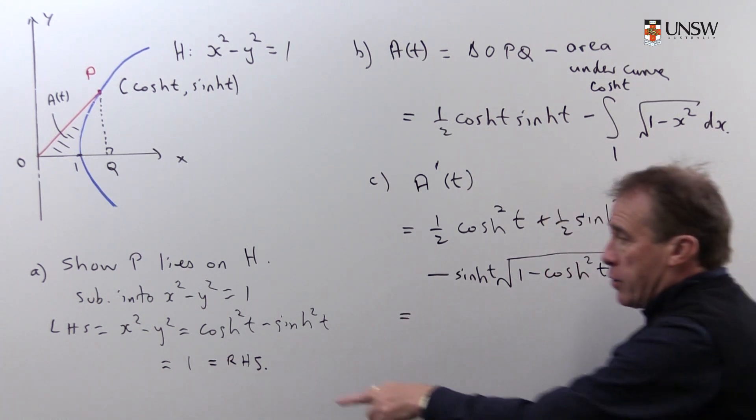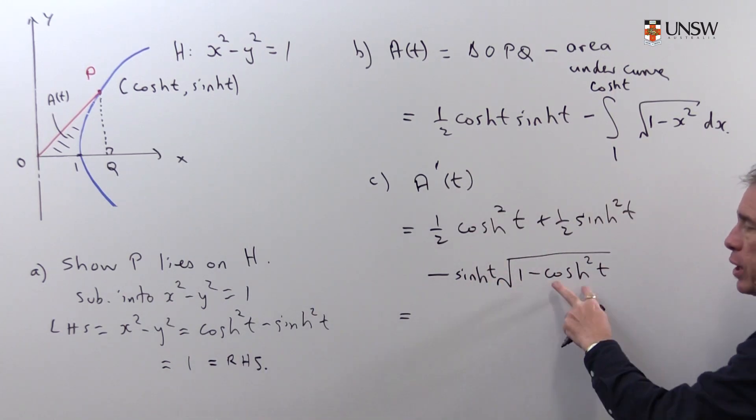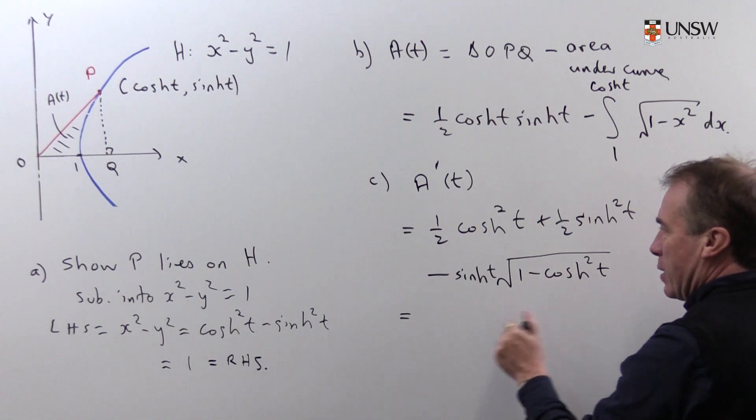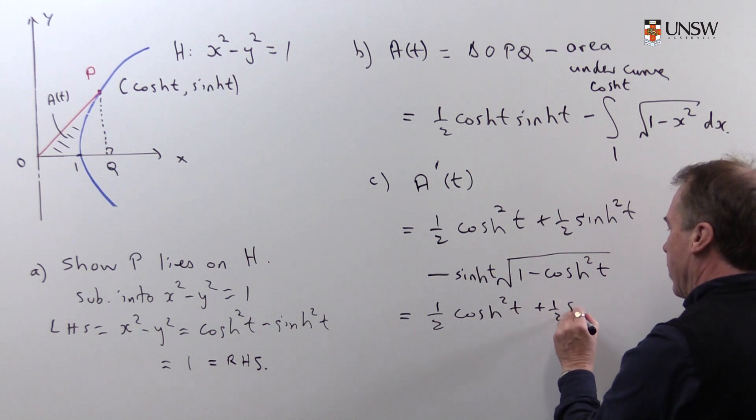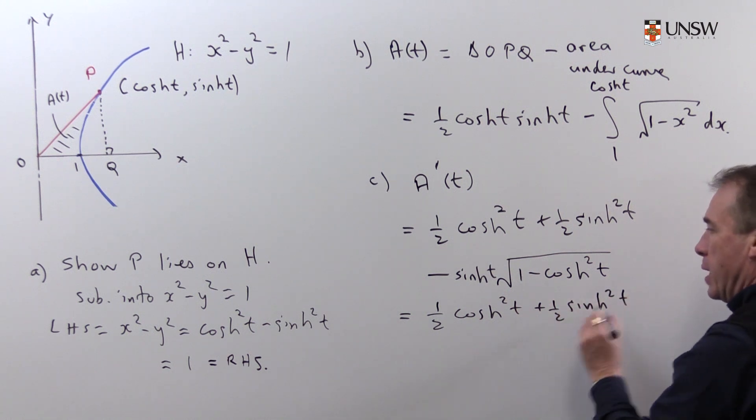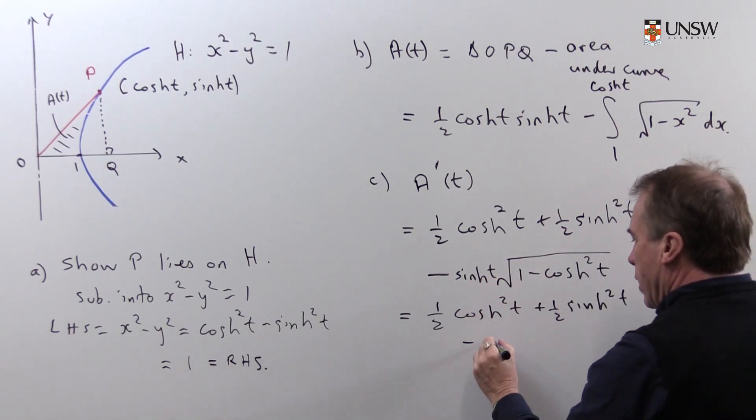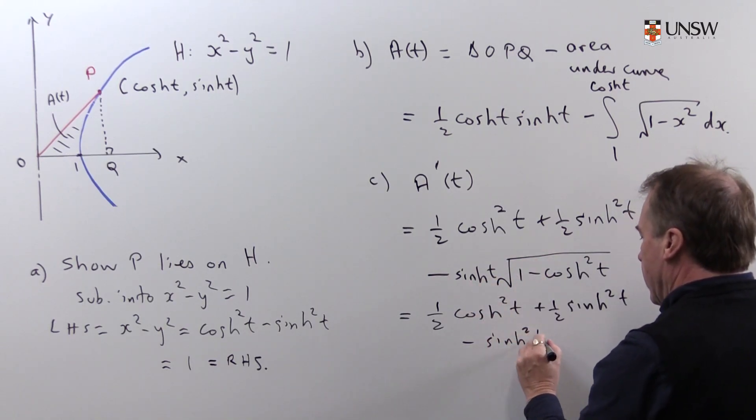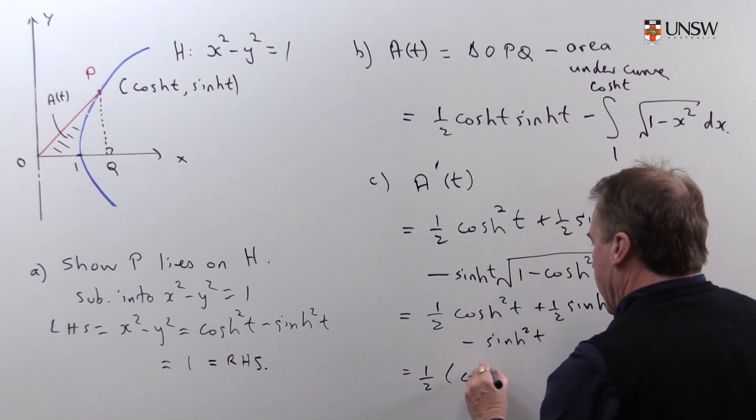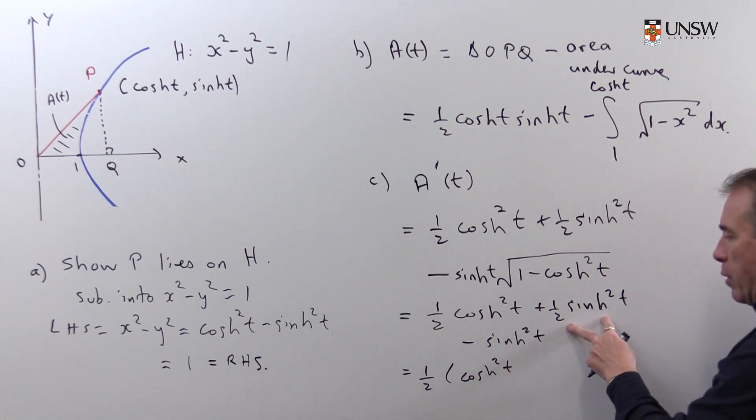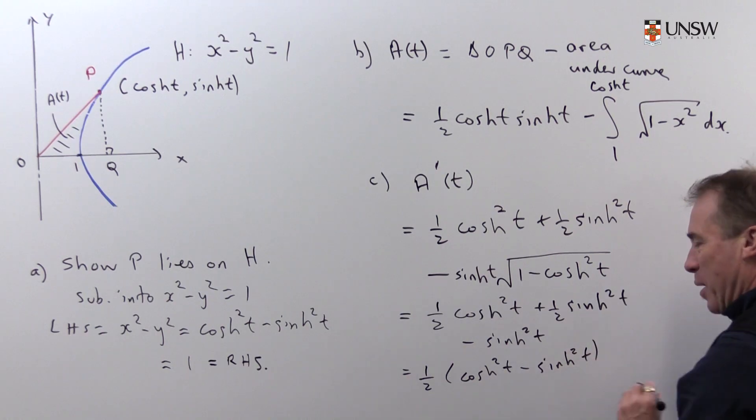Now, if we use the fact that we know that cosh squared minus sinh squared is 1, so 1 minus cosh squared is sinh squared, so that becomes another sinh, so I get a half cosh squared t plus a half sinh squared t, and then I get minus that sinh squared, take the square root and get sinh, let me get sinh squared t. I can simplify this a little bit, and indeed I can take out a half, so I get a half minus 1 is minus a half, take the half out.